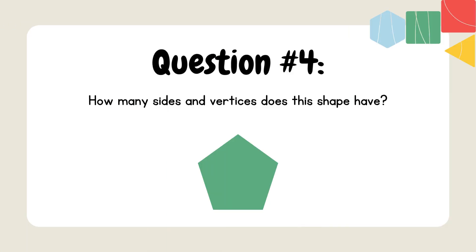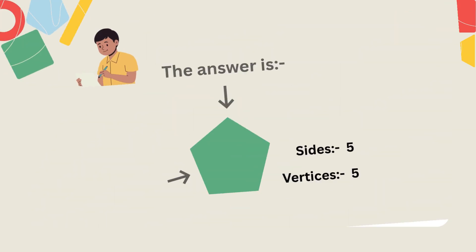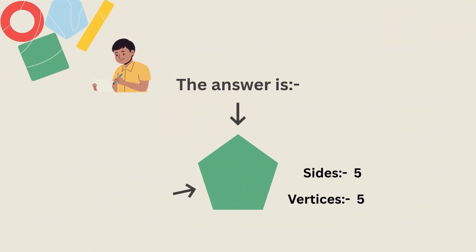Question 4. How many sides and vertices does this shape have? The answer is sides equal to 5 and vertices equal to 5.